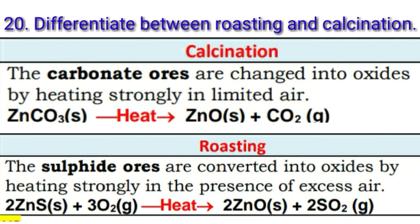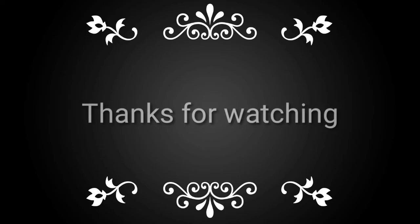Next question: differentiate between roasting and calcination. Calcination means carbonate ores are changed into oxides by heating strongly in limited air. Example: zinc carbonate on heating forms zinc oxide and carbon dioxide. Study these questions well. All the best for your exam.